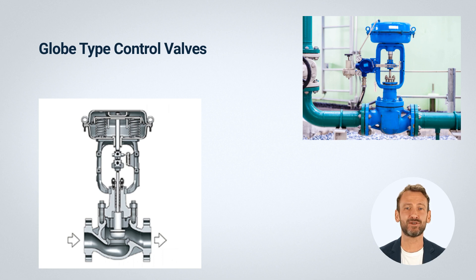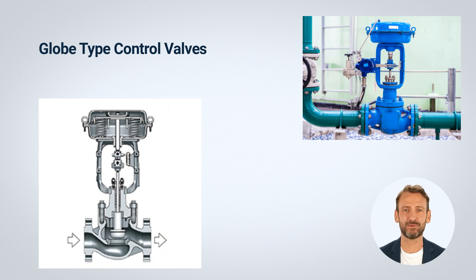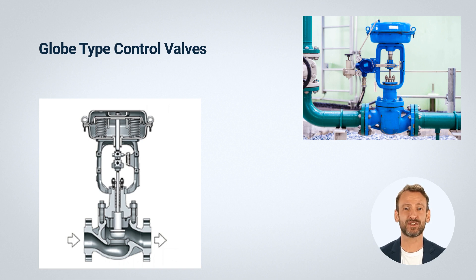Applications: globe valves are used in a wide range of industries including power generation, water treatment, oil and gas, and chemical processing. They are particularly well suited for applications requiring precise flow regulation. Globe valves offer advantages including precise flow control, good shutoff capabilities, and suitability for a range of fluids and pressures. However, they can be relatively expensive and can suffer from high pressure drops, which can impact overall system efficiency.